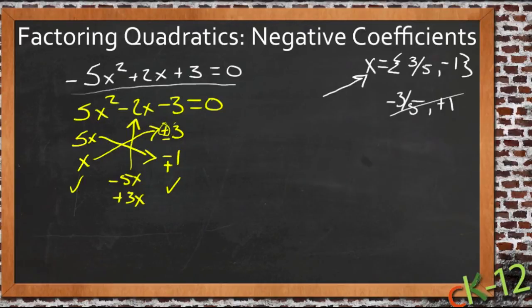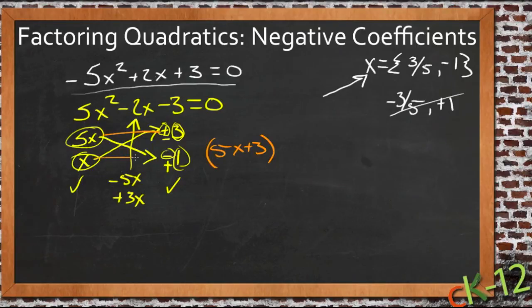It's positive 3 and negative 1 and 5x and x. So we get our answer straight across. And we get 5x plus 3 and x minus 1 equals 0.